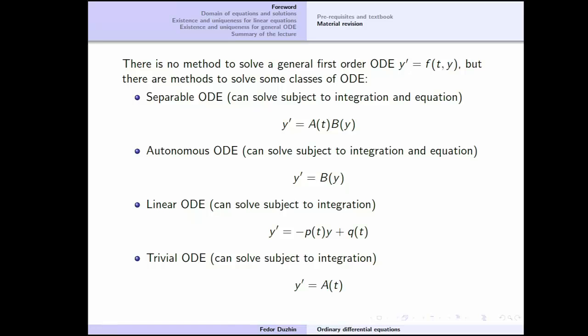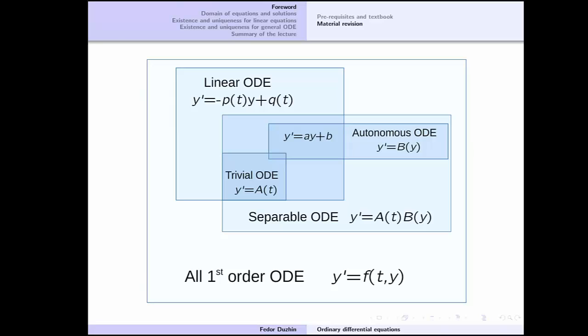Here is the Venn diagram of different classes of differential equations. We have linear differential equations and separable differential equations. These two classes have different methods of solution. These two classes intersect, so there exist ODEs that are at the same time linear and separable. Those ODEs can be solved by using either method. The good choice is usually the method for linear ODE—it is easier than the method for separable ODE.